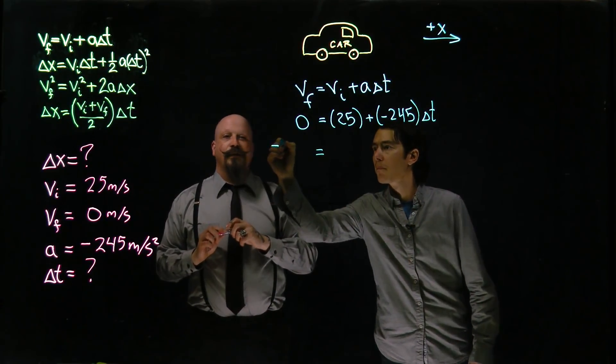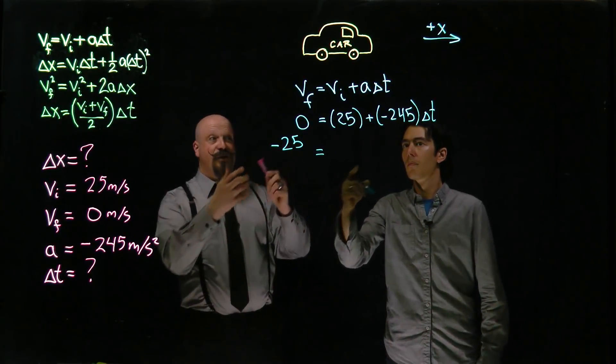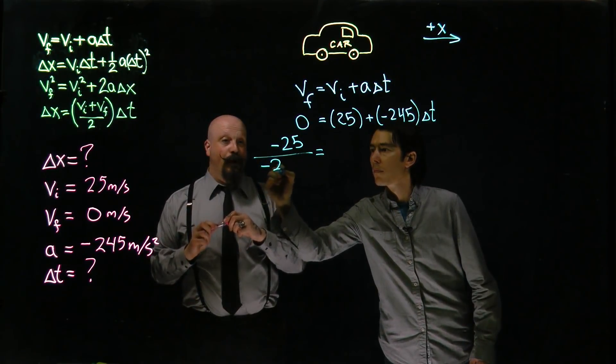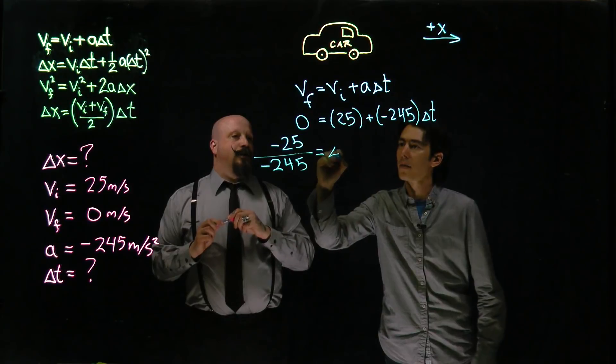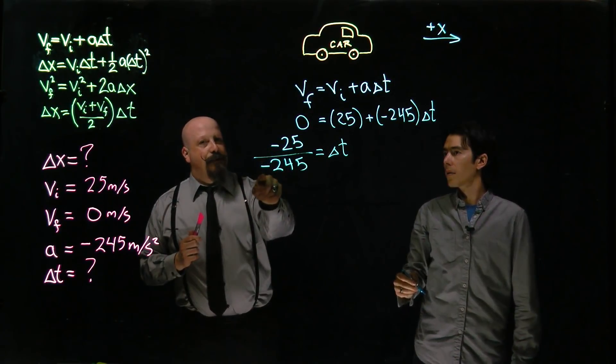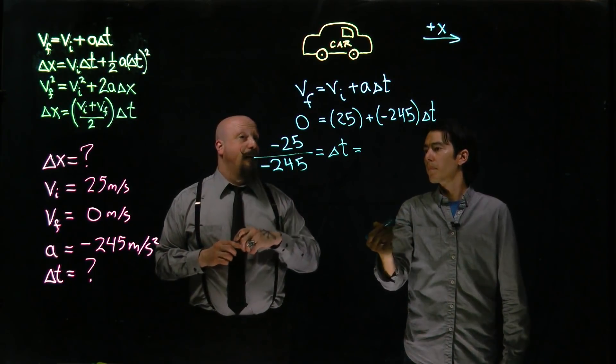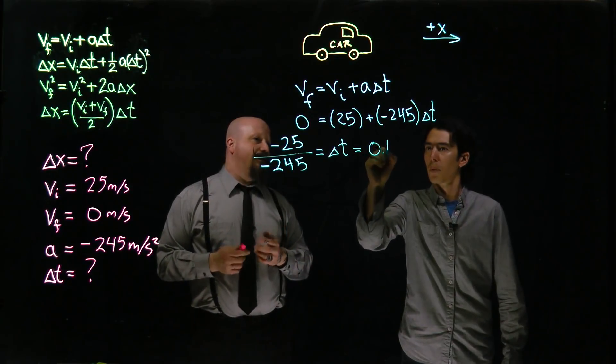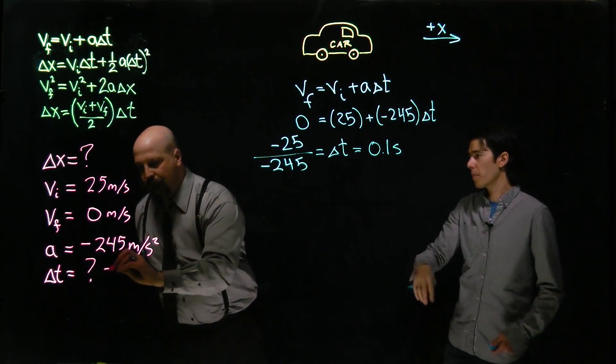So we bring that 25 over, giving us a value of minus 25, divided by the minus 245 meters per second squared. And that's good to solve for the time. And we see we got minus and minus. That actually gives us a positive value for time, which is about 0.1 seconds. So a tenth of a second it takes for your body to come to rest.